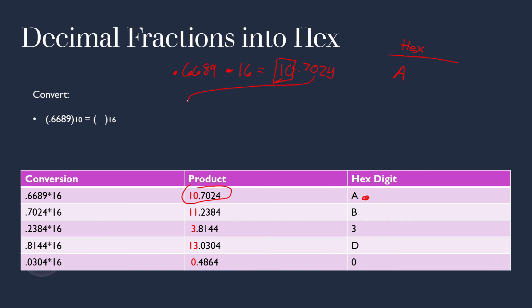We're going to take this and multiply that by 16 to find the hex digit, which will be 11.2384. We care about this integer value. And 11 maps out to B. Then we're going to keep going. 0.2384 times 16 maps out to 3.8144. We care about this. Maps out to 3. And we can keep going and keep going.